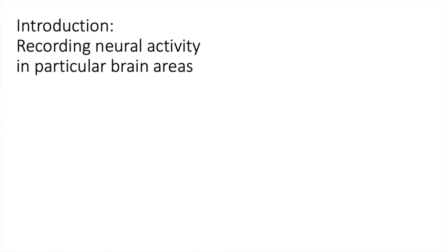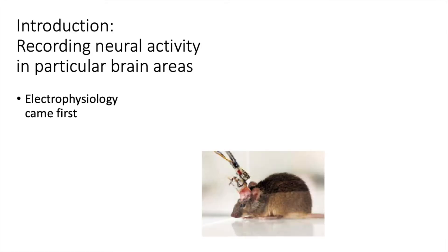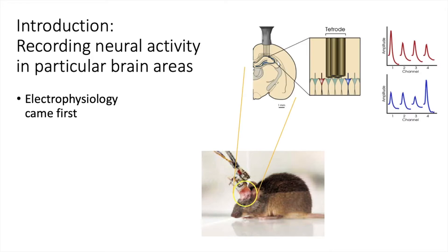Early neuroscientists wanted to record activity of neurons in the brain of awake moving animals so that they can discover clues as to what specific brain areas and circuits do. The first method used to detect neural activity used electrophysiology. This technique involved implanting simple electrodes in a rodent brain. These electrodes allowed for recording electrical activity produced by action potentials of neurons in the region where they are implanted.